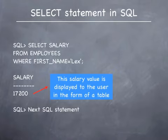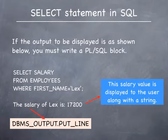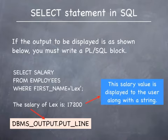After the output has been displayed, the cycle of waiting for the next SQL statement continues and you are returned back to the SQL prompt. Let's say you want to display the salary of the employee Lex along with a string that reads as 'the salary of Lex is: 17,200'. You do not want to see the output in the form of the table that queries normally display their output with. You might even want to process the salary further to calculate leave allowances based on salary.